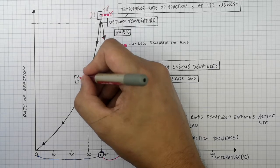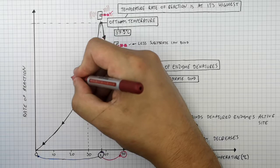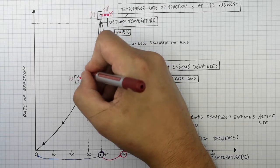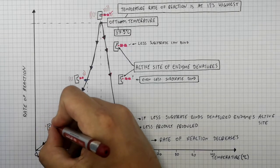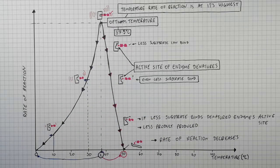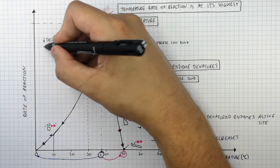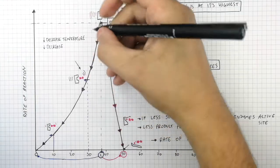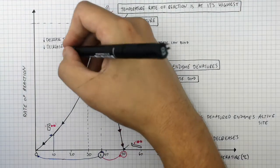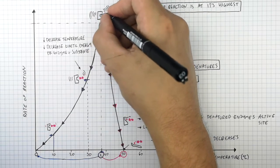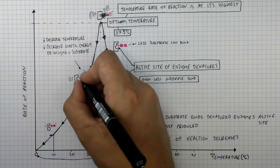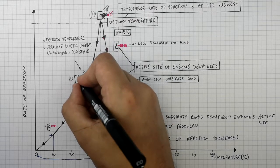It will only denature if you increase the temperature above the optimum. If we decrease the temperature, there is less kinetic energy stored in the enzyme and the substrate. Therefore, there are going to be fewer collisions between the enzyme and the substrate because they're not moving as fast. If we decrease the temperature even more, there is even less kinetic energy, so they're going to collide even less and less product will be produced. At the optimum temperature, there are more collisions between the enzyme and the substrate, but at a lower temperature there are fewer collisions because they are moving slower.